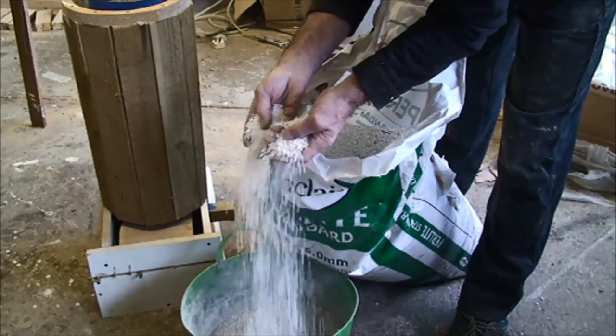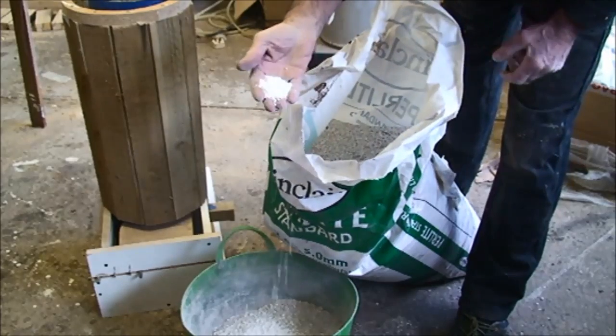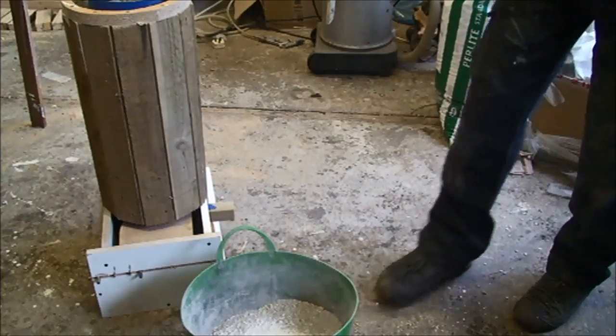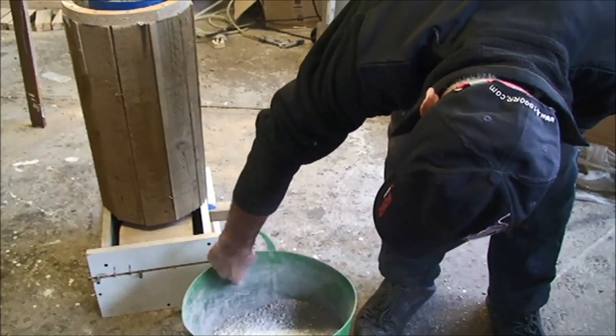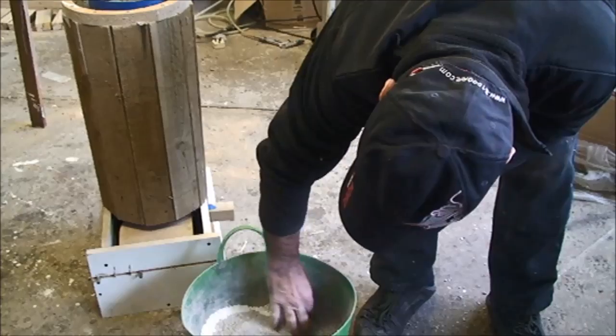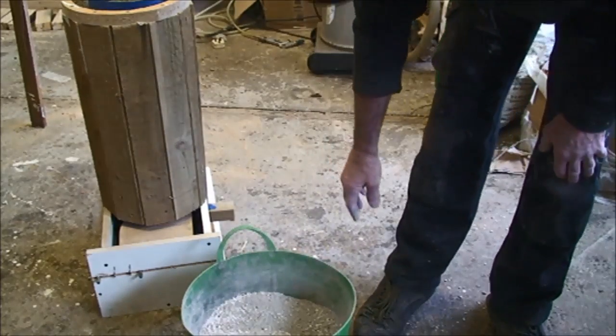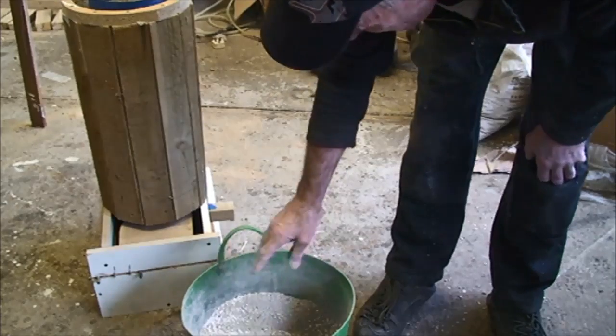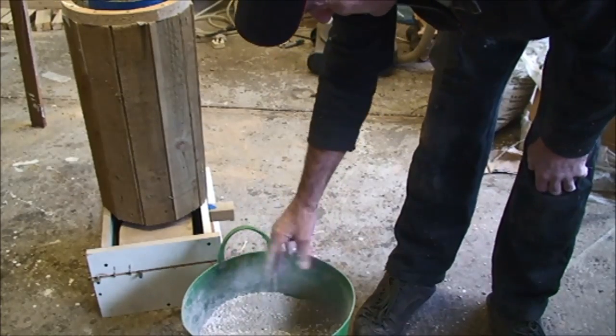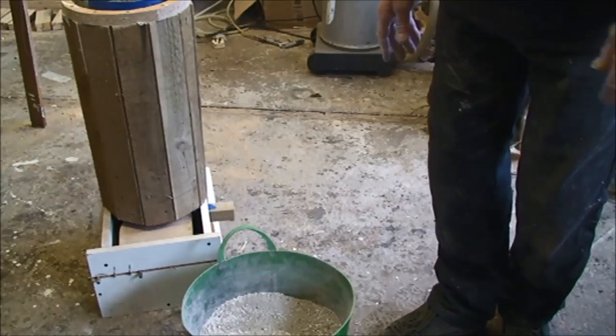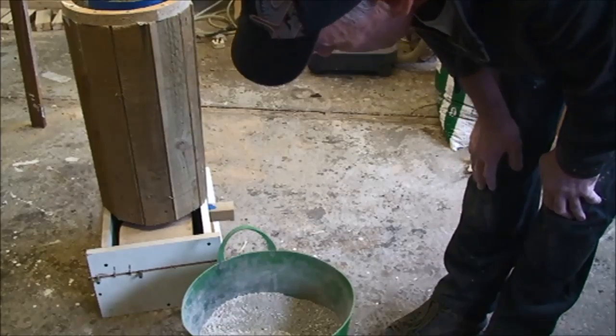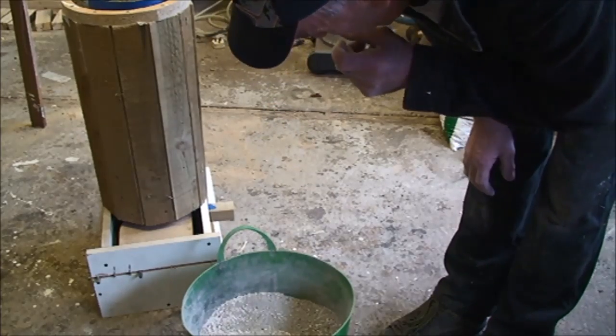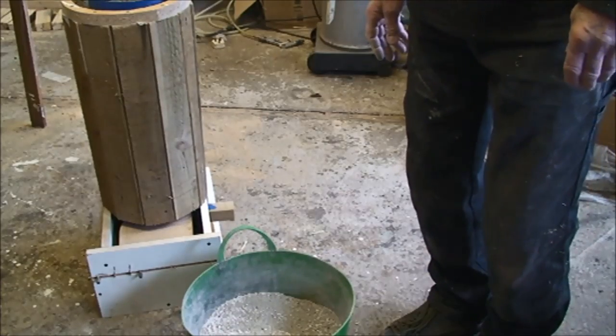I'm going to add the perlite to the castable refractory just to bulk it up and add some insulation. As I said before, the amount I'll need is somewhere about three inches from the top of that tub. I've given the tub a good measure of castable and then probably two-thirds castable and a third perlite. I'm going to mix that with water now. The consistency doesn't want to be sloppy and wet, it wants to be quite firm so it holds together.